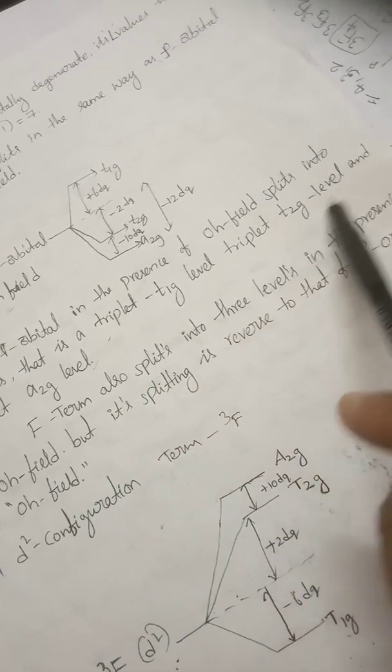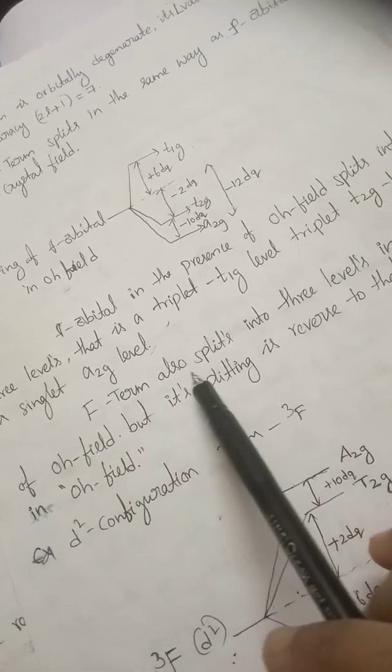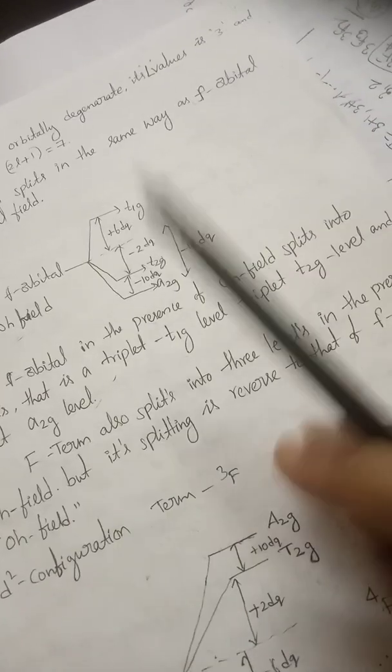We don't need to worry about the exact energy gaps here, only the splittings: A2g, T2g, and T1g for the F orbital in octahedral field. The F term also splits into three levels in the presence of an octahedral field: triplet T1g, triplet T2g, and singlet A2g levels. However, the splitting is reversed for the F term compared to the F orbital — F orbital splitting and F term splitting are different.